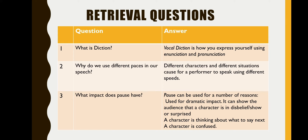Number one, vocal diction is how you express yourself using enunciation and pronunciation. Number two, different characters and different situations calls for a performer to speak using different speeds. Number three, pause can be used for a number of reasons: used for dramatic impact, it can show the audience that a character is in disbelief or show that they're surprised, it could show a character is thinking about what they're going to say next, or it can show that a character is confused.